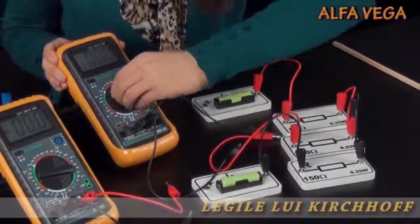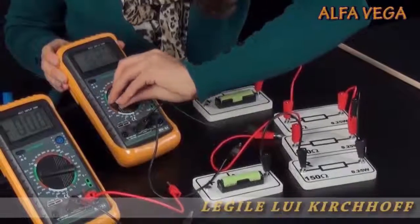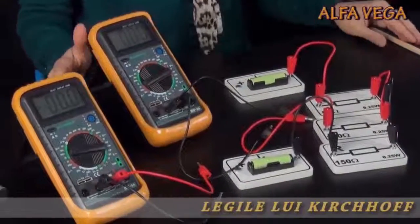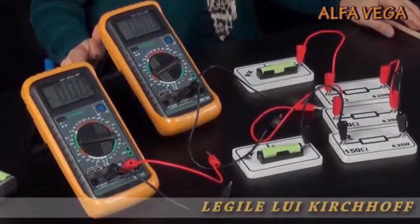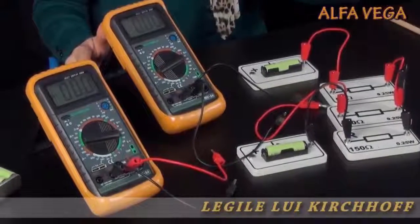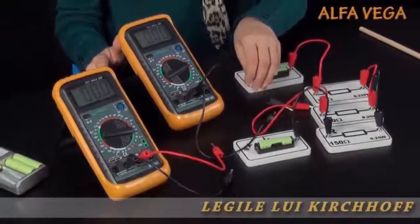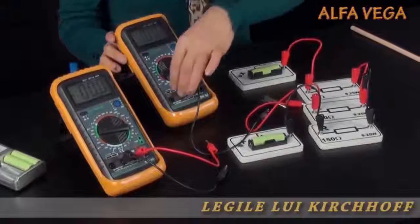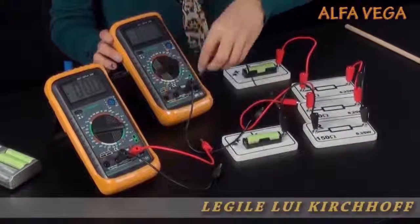Continuăm prin a regla un multimetru pentru măsurarea tensiunii continue până la 20V. Se măsoară tensiunea electromotoare a surselor la mersul în gol.